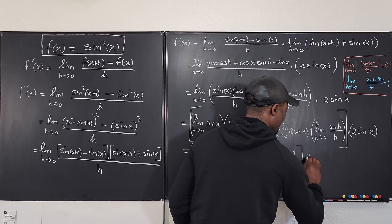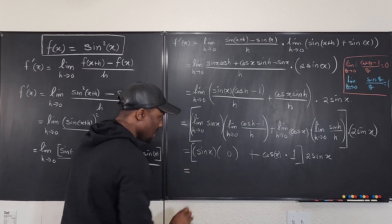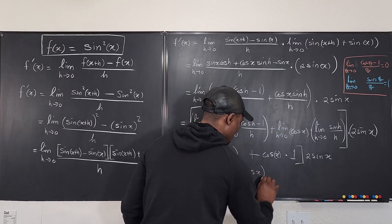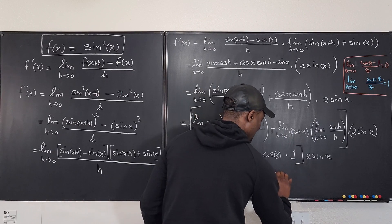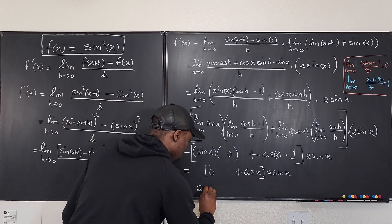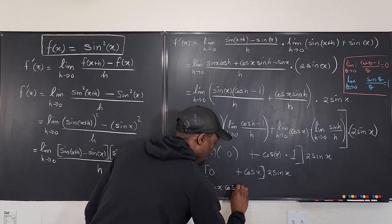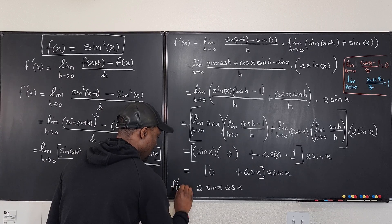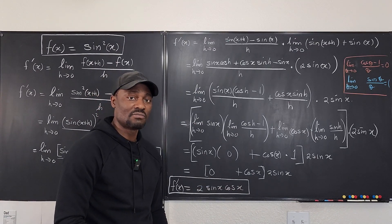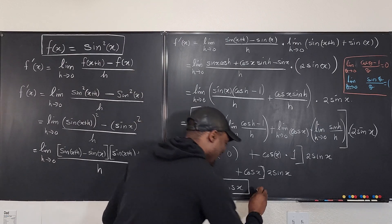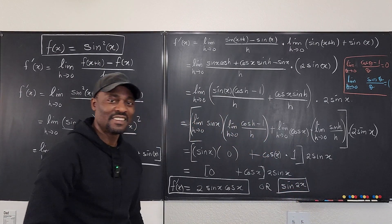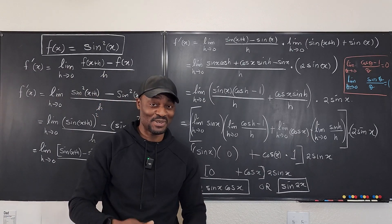So what we have is zero plus cosine x times one, multiplied by two sine x. Our answer is two sine x cosine x — and that's the derivative of sine squared x. You can also rewrite this as sine 2x using the double angle identity, whichever you like. Take it — never stop learning. Those who stop learning have stopped living. Bye!